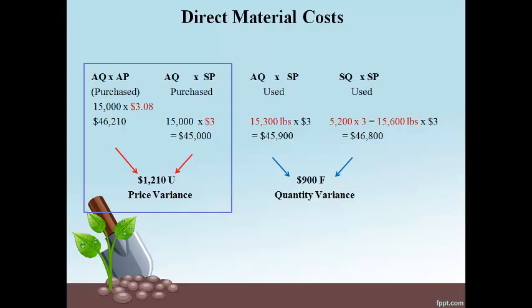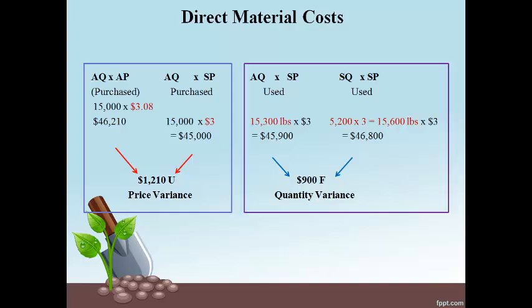Materials purchased is analyzed on the left side and materials used is analyzed on the right side. On the left side, the total actual cost of $46,210 divided by the actual quantity of 15,000 pounds gives a cost of $3.08 per pound. This is $0.08 higher than the expected cost of $3.00, resulting in paying $1,210 more than expected. Paying more than expected is unfavorable. The AQ times SP is the expected cost of the actual quantity that was used.